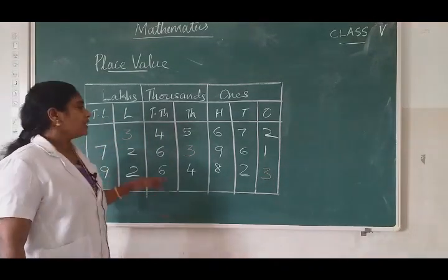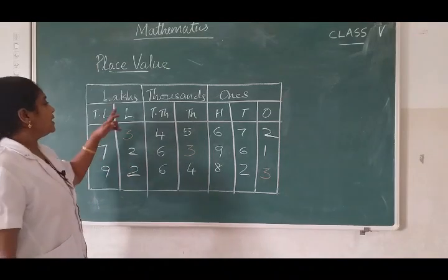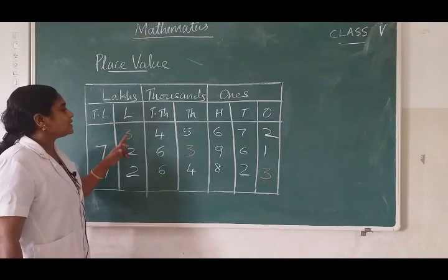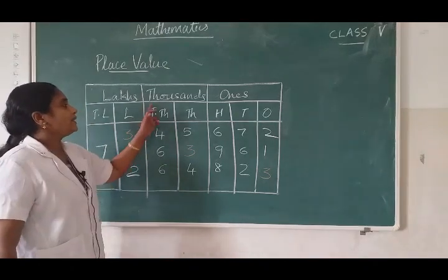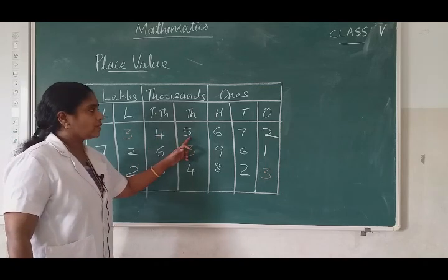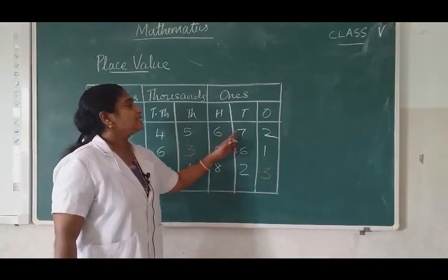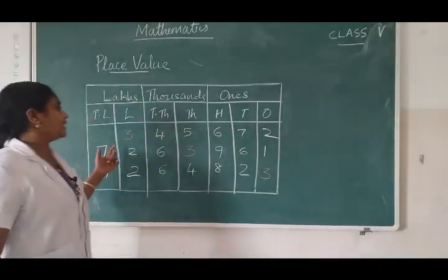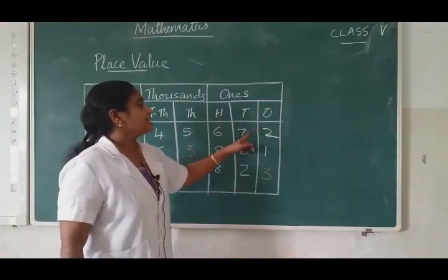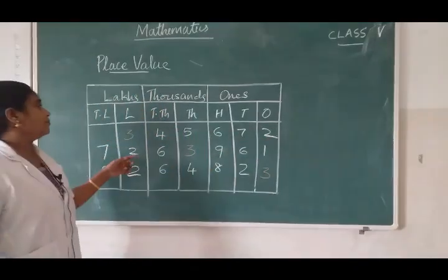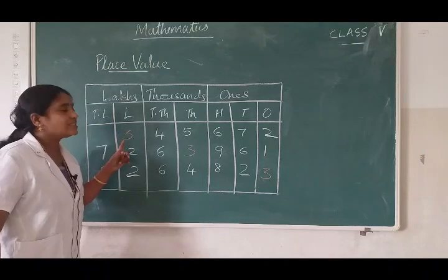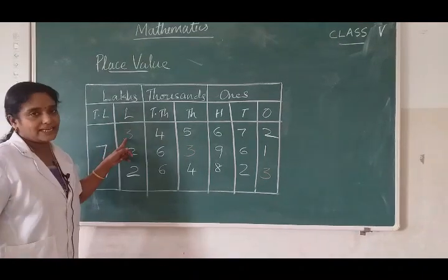Some numbers are given here. The first digit 3 comes under the lakhs place, so this is 3 lakh. Under the thousands period, 45 is there. So we can read the number as 3 lakh, 45,672. In this number, 3 comes under the lakhs place, so the value of 3 is 3 lakhs.